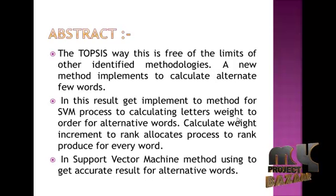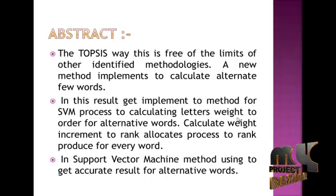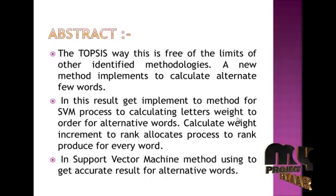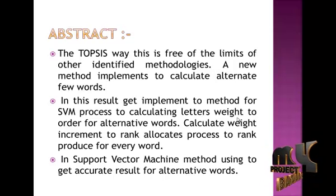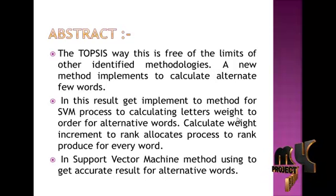Using synonymous words, four companies' best results are calculated and compared against the next company. The SVM process implements letter weights ordered by alternative words; calculating weight increases it to the rank allocation process to produce a rank for every word. The support vector machine method uses accurate results for alternate weights, getting the alternate result for every user and every synonymous way.